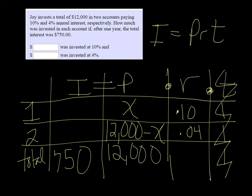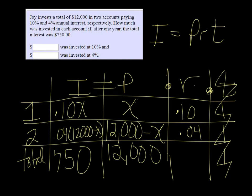To get the interest I multiply. See P times R is equal to I. So this would be .10x and .04 times 12,000 minus x. See if I can squeeze all that in there. Just barely. Alright, now I'm ready to make an equation. I have enough to do that with.